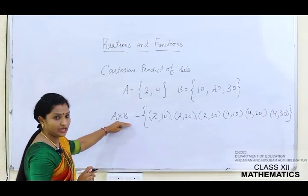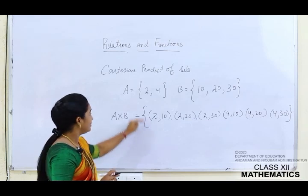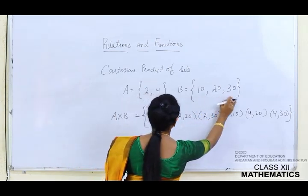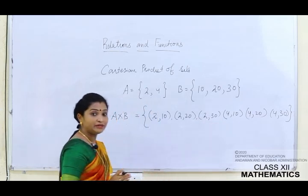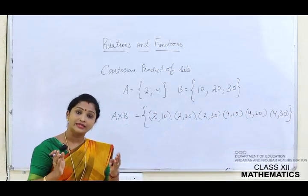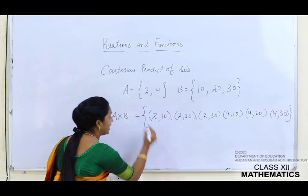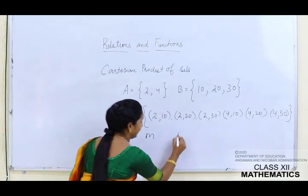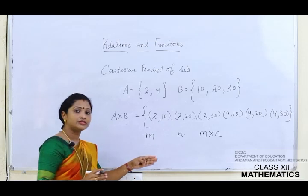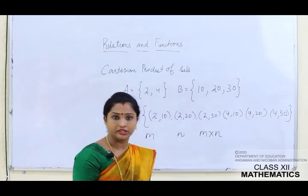The Cartesian product means when you form ordered pairs of the first set with the other set - each and every element paired with each and every element of the second set. It is normally denoted by A cross B. The number of elements in set A is two and in set B is three, so A×B has six elements. The result is: if set A has M elements and set B has N elements, then A×B has M×N elements.